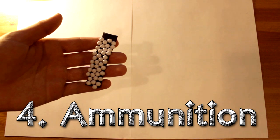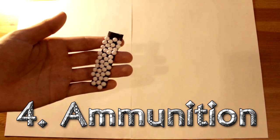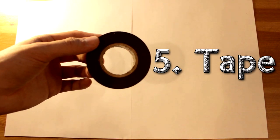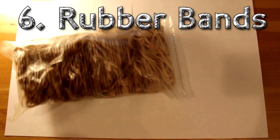Ammunition like airsoft BBs, toothpicks, erasers, pebbles, or anything else you can fit into the barrel. Tape - electrical and duct tape are the best, but scotch tape works too. And lastly, a few rubber bands.